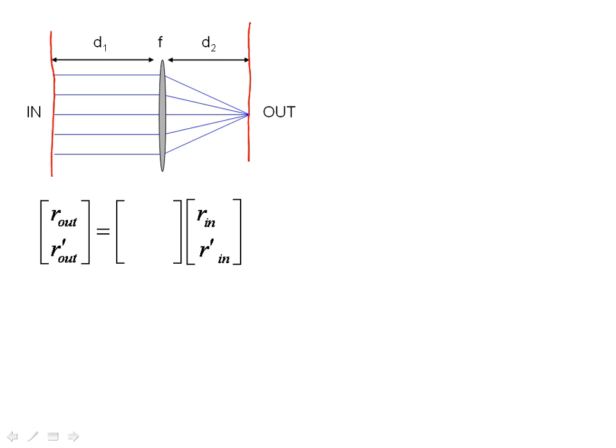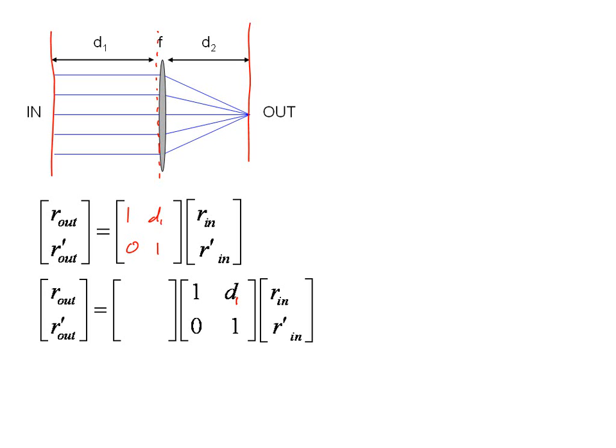How do we go about calculating this? Well, it's a pretty straightforward process, because all we have to do is calculate the effect of the first element of our system, which is going to be the space D1. So I can write the matrix for that: 1, D1, 0, 1. Then once I solve this, I can multiply it by the next matrix. And that's going to be my lens: 1, 0, minus 1 over F, 1.